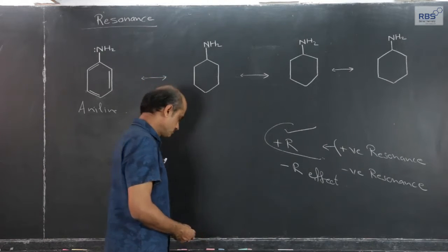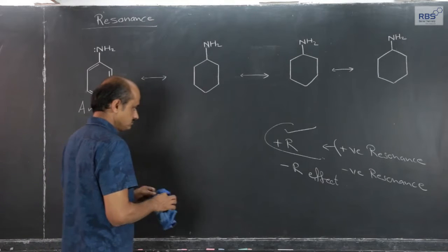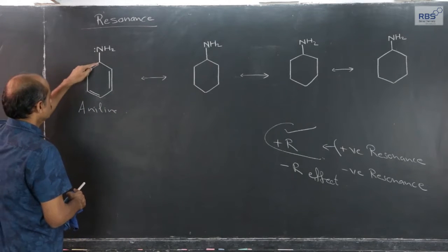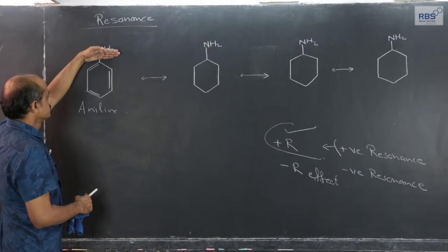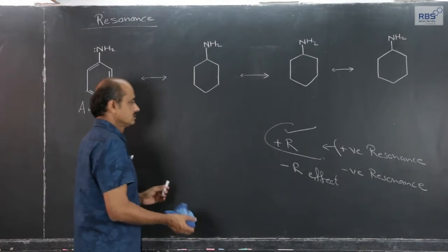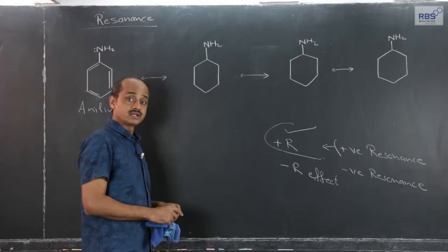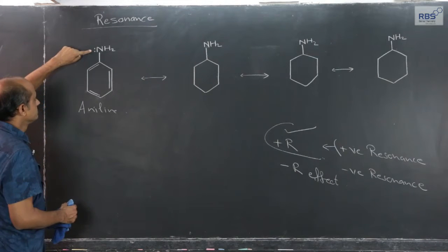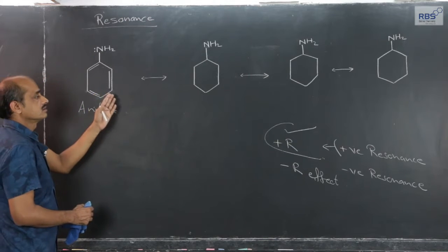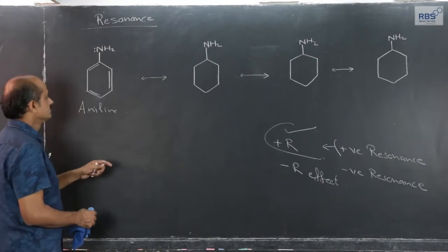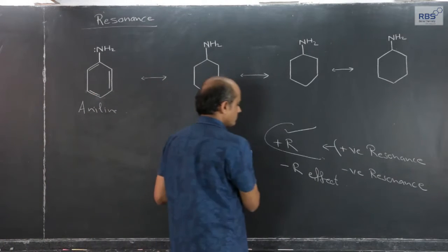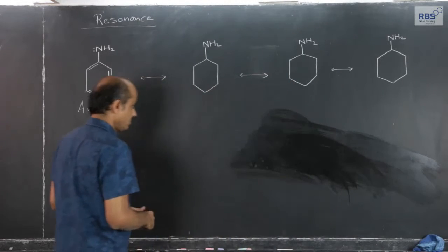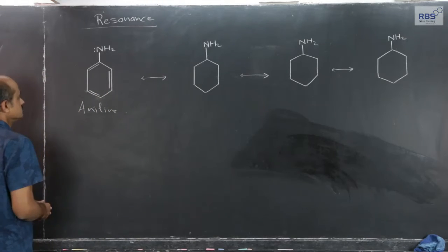Why and how is aniline an example of plus R effect? Let us see. Benzene itself has two resonating forms, as we have considered. When one hydrogen atom attached to carbon is replaced by an NH2 group, we get aniline. The NH2 group is attached directly to the aromatic carbon, and the lone pair of electrons present on nitrogen in the NH2 group makes various other resonating forms possible.